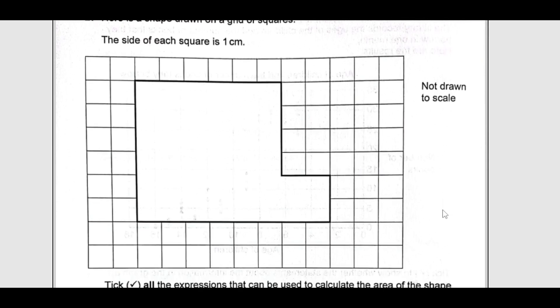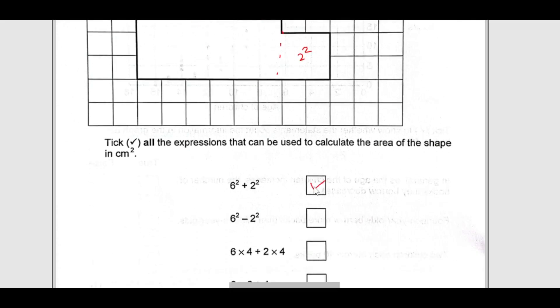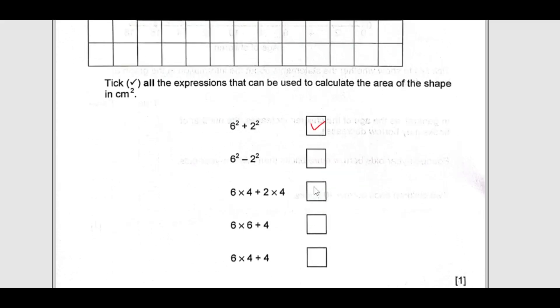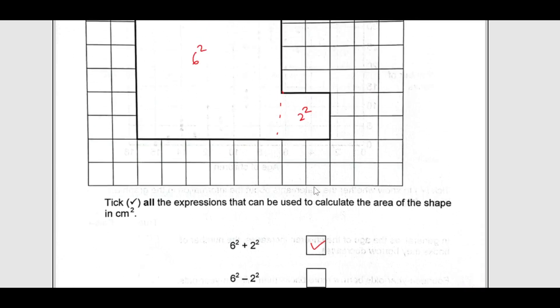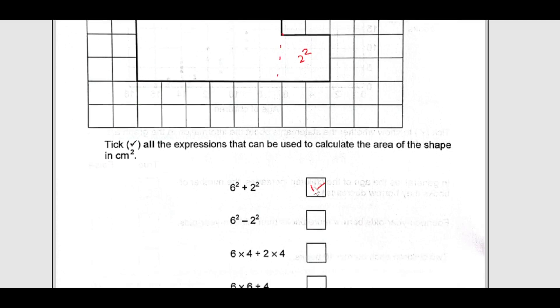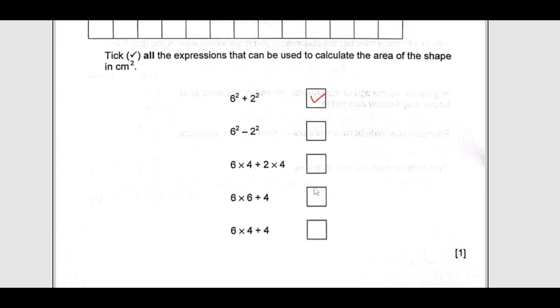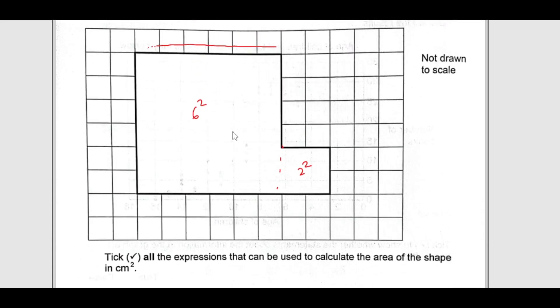Next, we have number 27. Here is a shape drawn on a square grid. The side of each square is 1 centimeter. Tick all the expressions that can calculate the area. We see here we have 6 squares this way, and we have 1, 2, 3, 4, 5, 6 this way. You can divide it like this. So this is 6 times 6, that is 36 square, then this is 2 square. If you add, so the first one is correct. This one cannot be. Then 6 times 4 and 2 times 4, that is not correct. And then we have 6 times 6 plus 4, this is correct. We have 6 times 6 here and then these 4 squares.